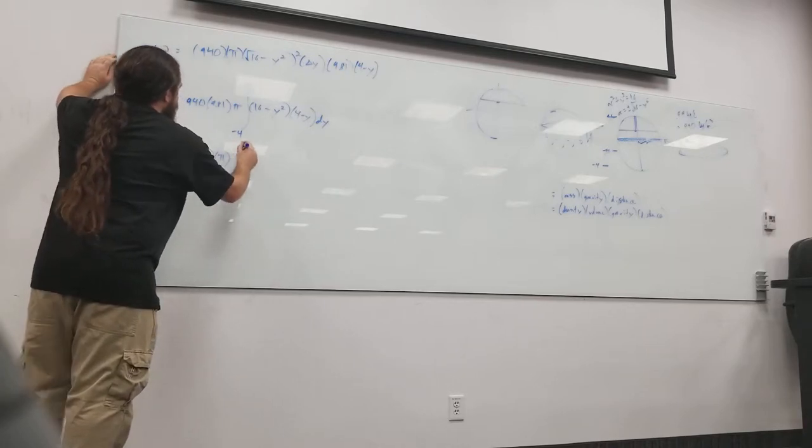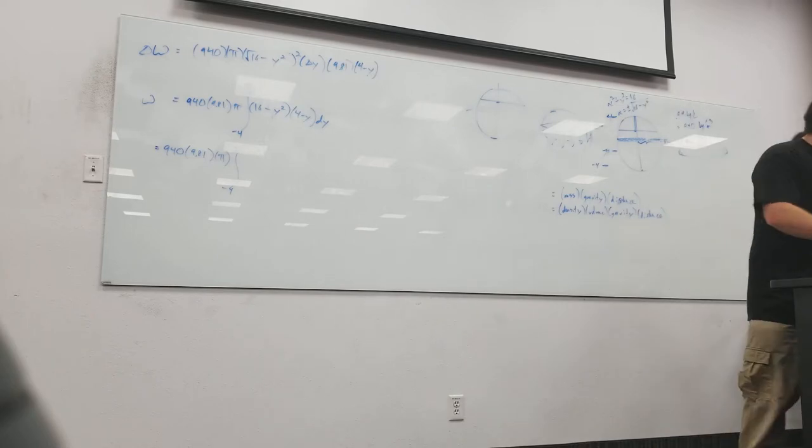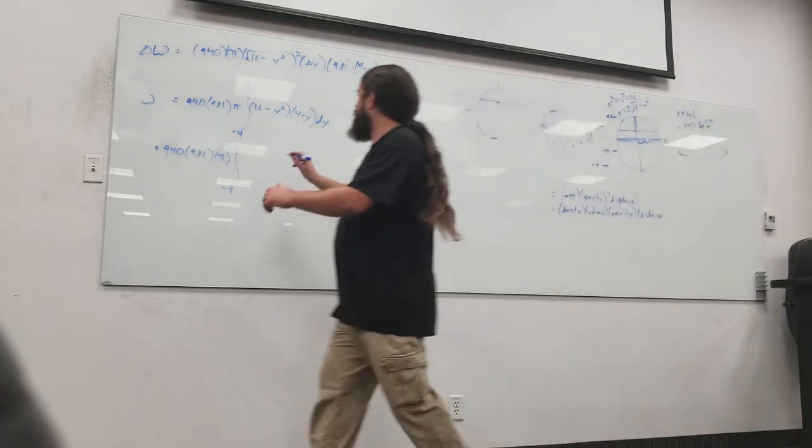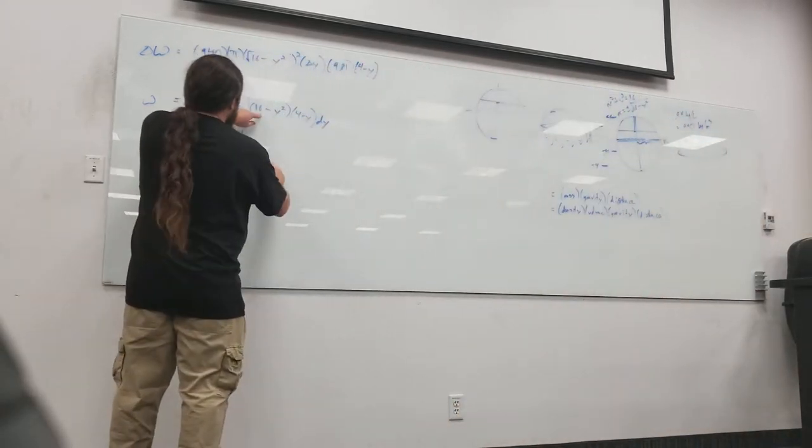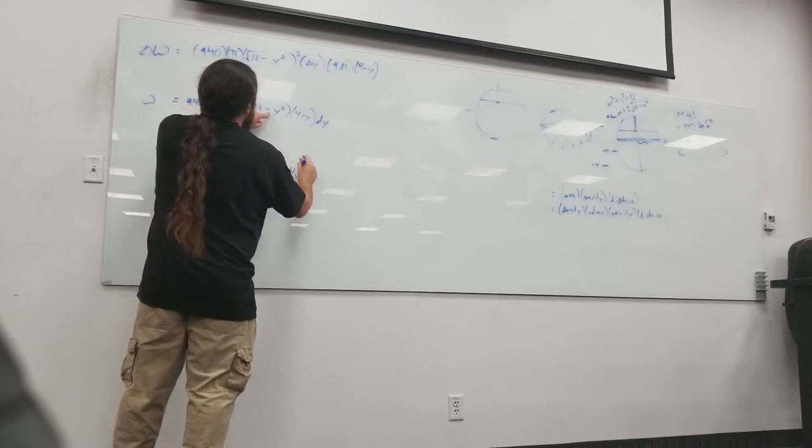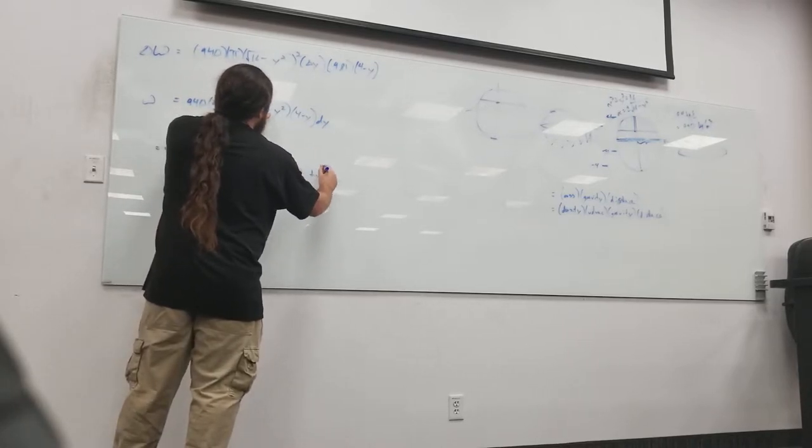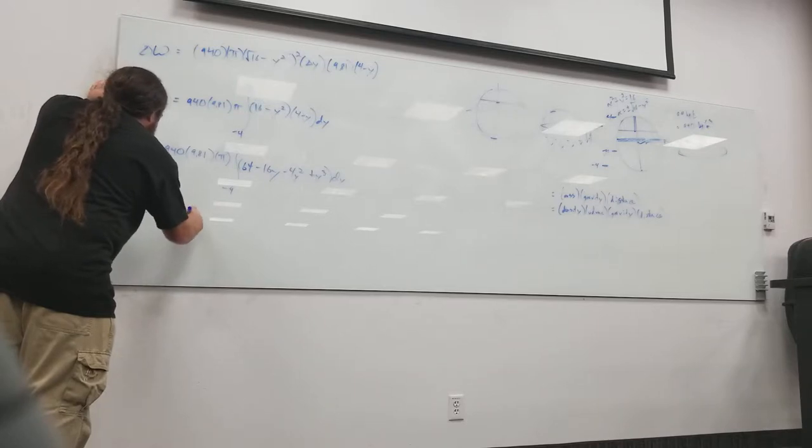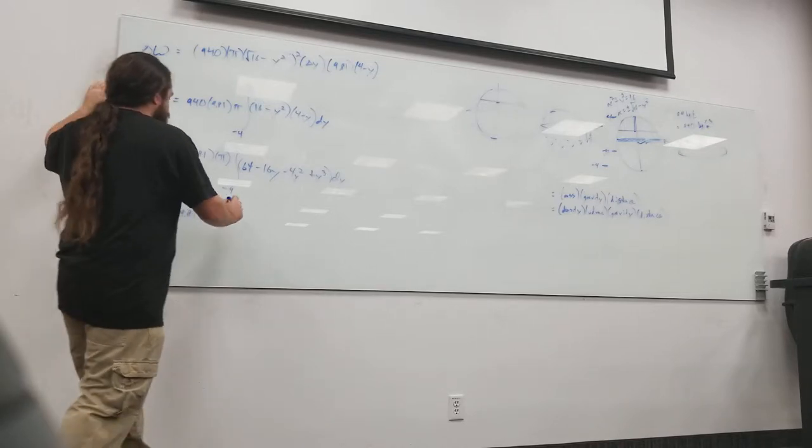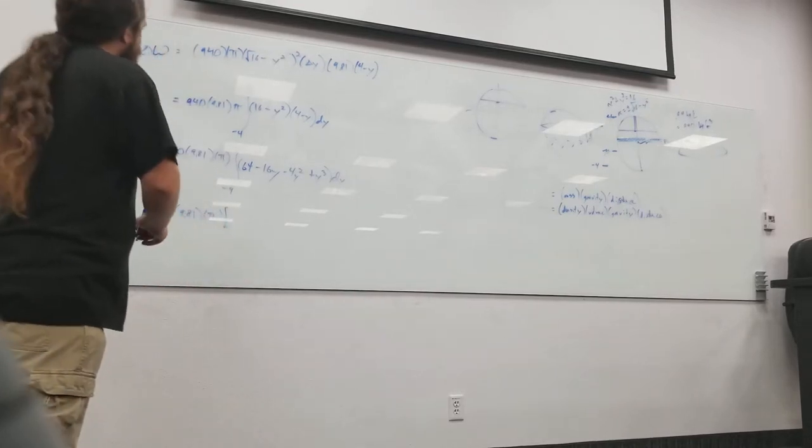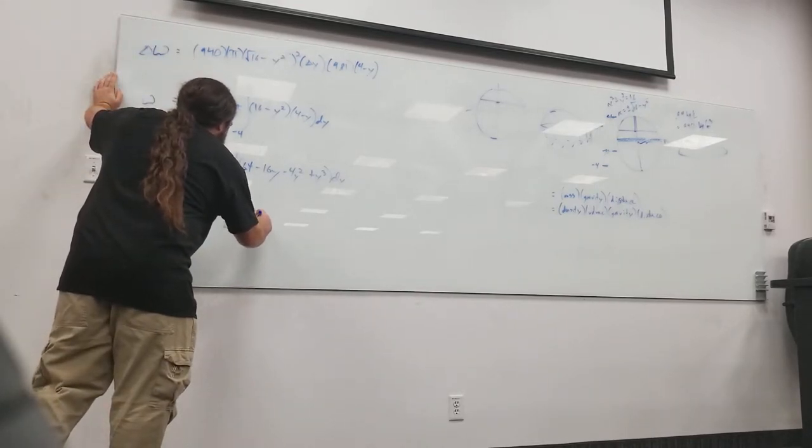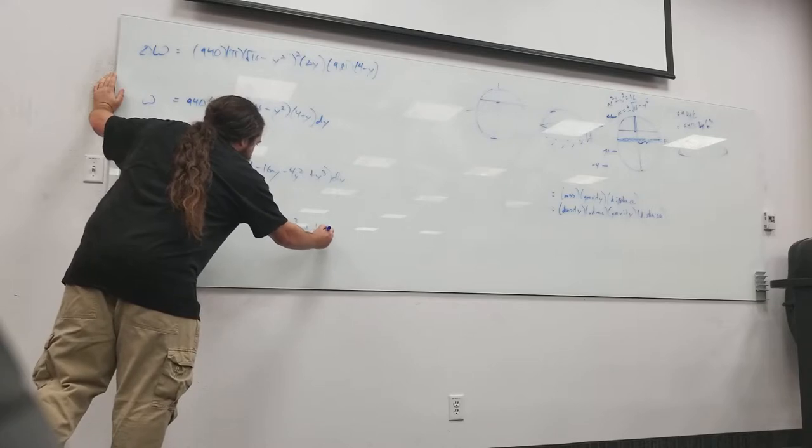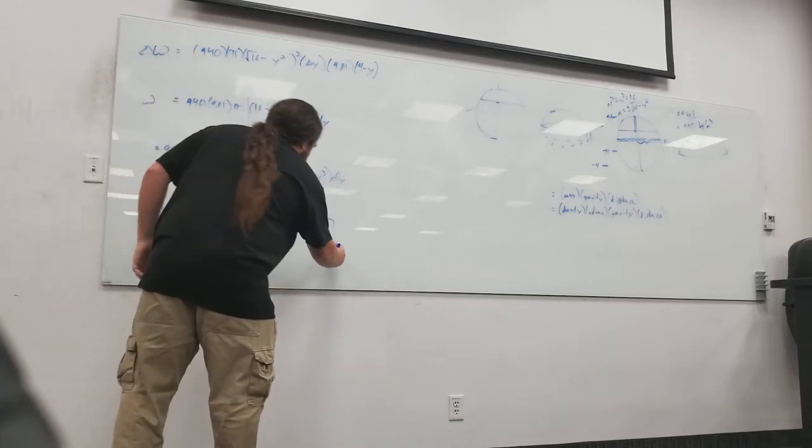940 times 9.81 times pi. That's the integral from negative 4 to 2. 64 minus 16y minus 4y squared plus y cubed. 940 times 9.81 times pi. Okay, so let's integrate this guy. This is 64y minus 8y squared minus 4 thirds y cubed plus 1 fourth y to the 4th. At negative 4 and 2.